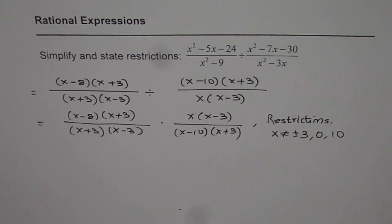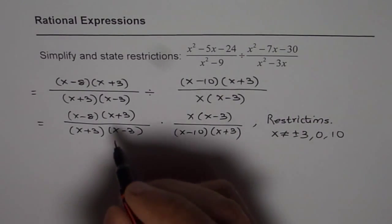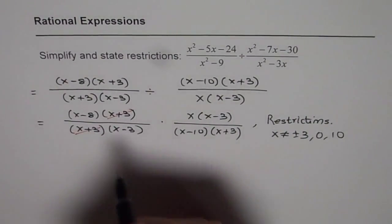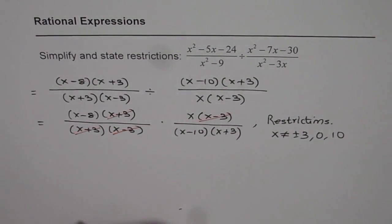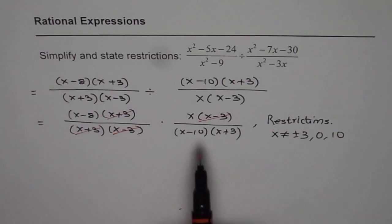Now, we should simplify it. x plus 3 and x plus 3 can cancel out. x minus 3 and x minus 3 can cancel out. There are no more common factors.